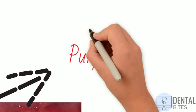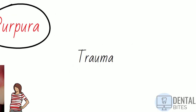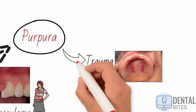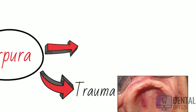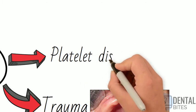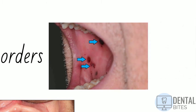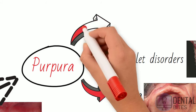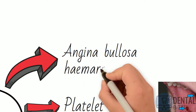The last group of causes for red lesions we'll talk about today are the purpura category. Purpura is the name given to the red or purple spots seen on the skin or mucous membranes due to internal bleeding from small blood vessels. This can occur in the mouth because of trauma — for example, in one case an elderly patient continued to wear a fractured denture for several days. It can also be caused by platelet disorders such as thrombocytopenia, and lastly a condition called angina bullosa haemorrhagica, where patients develop blood blisters.